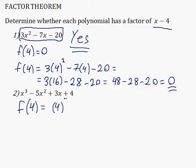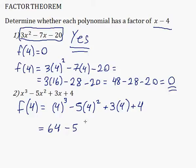So f(4) is going to be 4 cubed minus 5 times 4 squared, again just plugging in the 4s for all the x's, plus 3 times 4 plus 4. So 4 cubed is 64, 4 squared is 16, plus 12 plus 4.